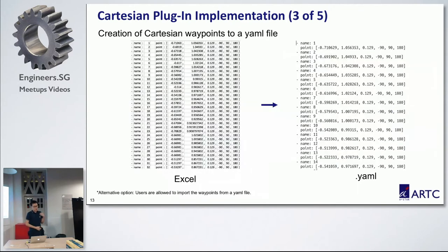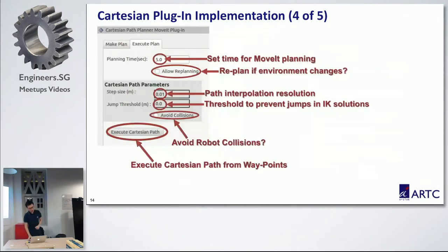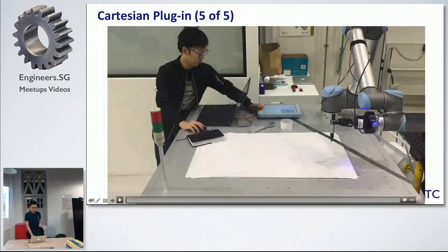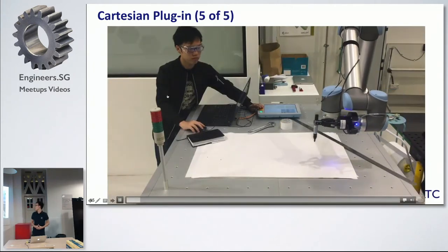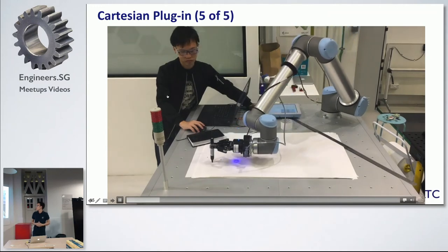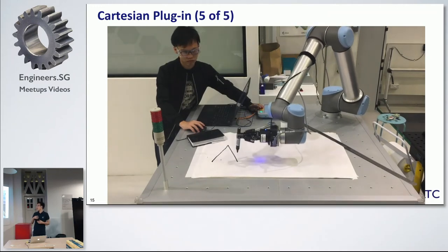So I used a path creator to get all the coordinates, then used Excel to format them into a YAML file. The YAML file is then loaded into the Cartesian path planner and executed. We can also change the step size to change the speed. This is the demonstration of the Cartesian plug-in writing ARTC. Since the PicoTool is quite expensive, I used a marker tool instead.